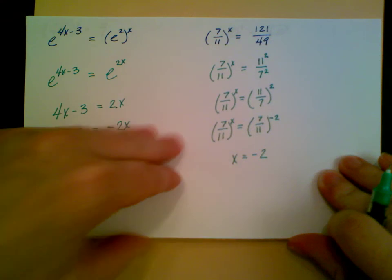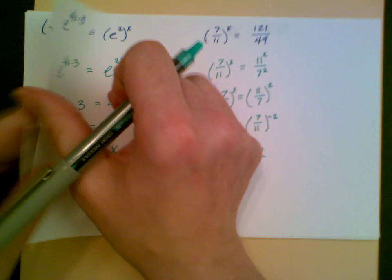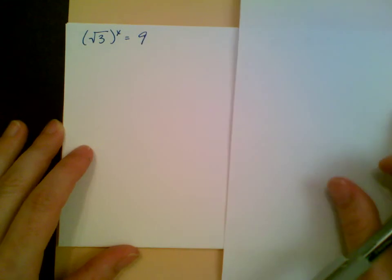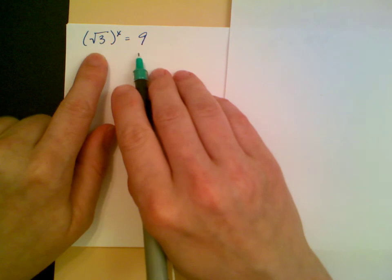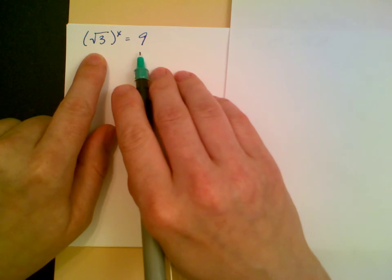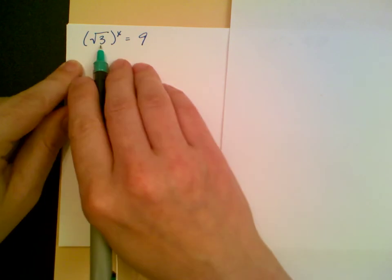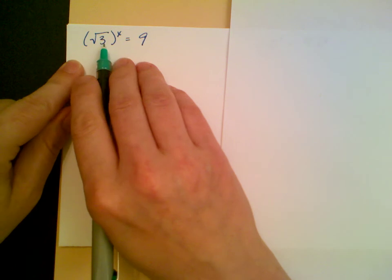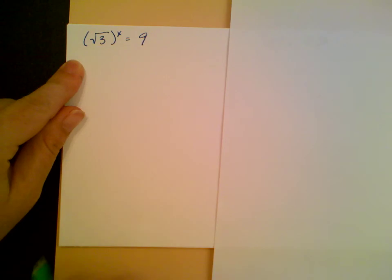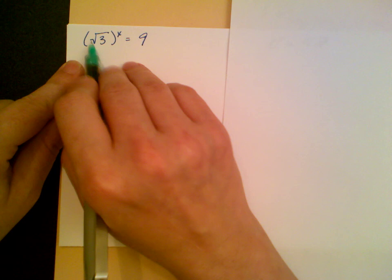Just a couple more. We want to rewrite both things in here as the same base to an exponent. But here I have a root. But remember, as we had in our reading, a root, in this case the square root, is the same as a fractional exponent.